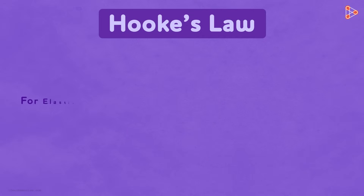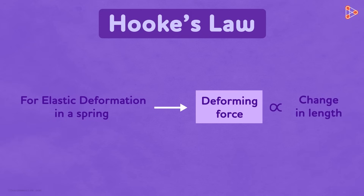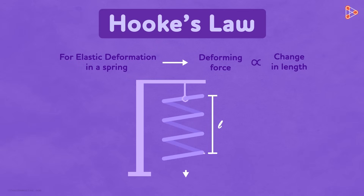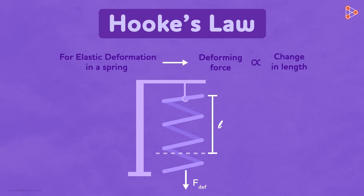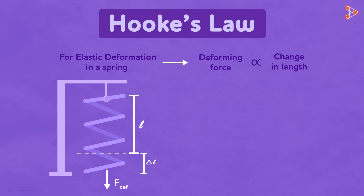It states that for elastic deformation in a spring, the deforming force is directly proportional to the change in length. Consider a spring of length L, whose one end is fixed. Suppose a stretching force F is applied on the other end, and let the change in its length be Delta L.